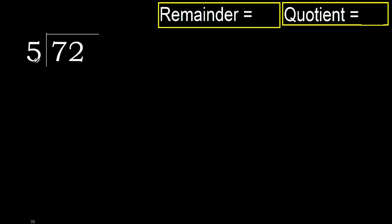72 divided by 5. 7 is not less, so with 7: 5 multiplied by which number is nearest but not greater? 5 multiplied by 2 is 10, 10 is greater. 5 multiplied by 1 is 5, is not greater. Ok.